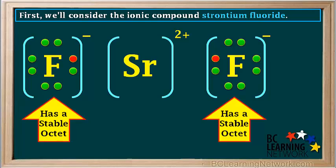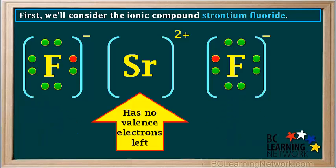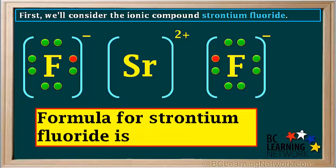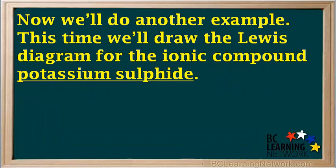Notice each fluoride ion has a stable octet, and the strontium ion has no valence electrons left. We can see that there are two fluoride ions for each strontium ion, so the formula for the compound strontium fluoride would be SrF₂.